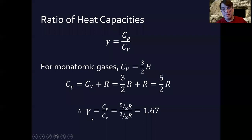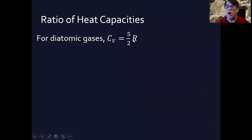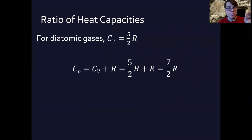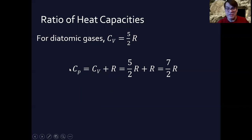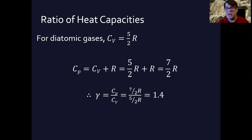For diatomic gases, from chapter 18 the molar heat capacity at constant volume is Cv = (5/2)R. Using Cp = Cv + R, we get Cp = (7/2)R. So γ = (7/2)R / (5/2)R = 7/5 = 1.4, and again this bears out experimentally as well. The last point in this section is that for an ideal gas, internal energy is only dependent upon temperature — not on pressure or volume — so the change in internal energy equals n·Cv·ΔT regardless of volume.